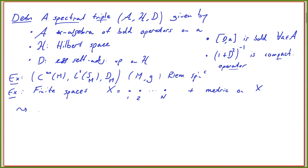Let's think for a moment what it means to be a smooth function on a finite space. Smooth is actually an empty condition here, so it means I need a function from these N points to C. This means C∞(X) is just C^N — just the values the function takes at these N points, an N-dimensional vector space. To think about spinors is also not very difficult: at each point you have some complex number, and on C^N the most general possibility is an essentially self-adjoint operator, which is just a Hermitian matrix D† = D.